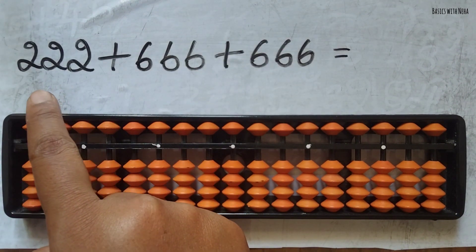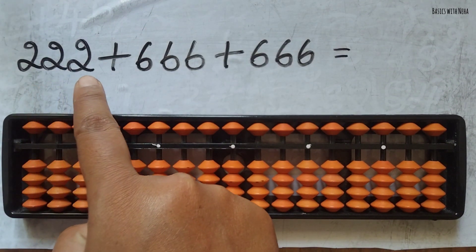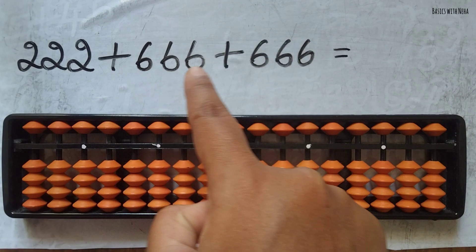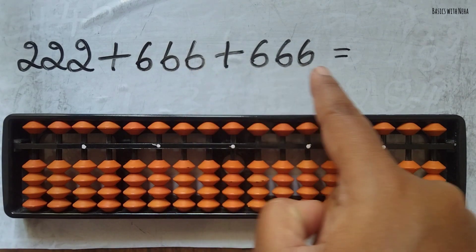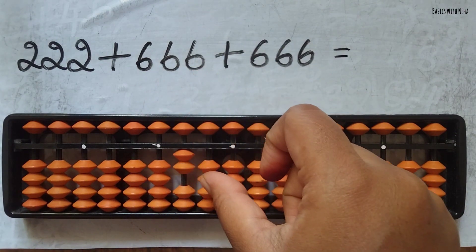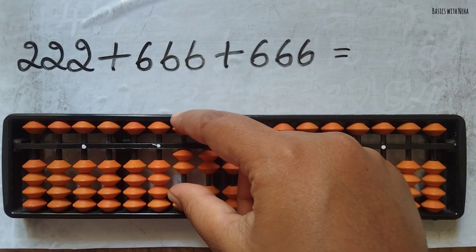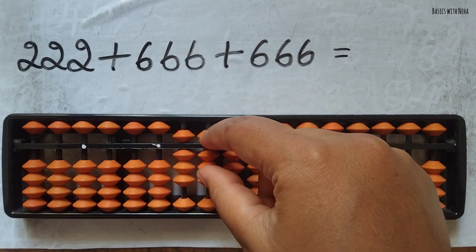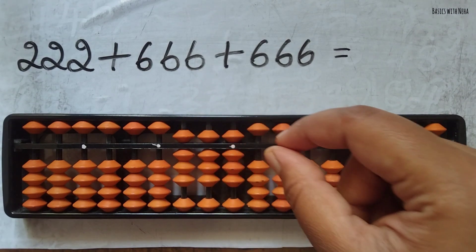The next question: 222 plus 666 plus 666. First take 222. Now add 666 directly.